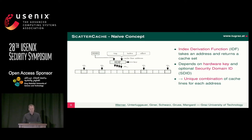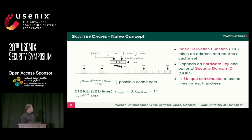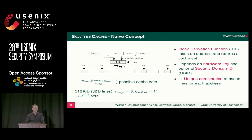We can calculate how many cache set combinations there are. If we use a 512-kilobyte cache, eight-way set-associative, which would normally have 2048 cache sets, with this design we get more than 2 to the 96 cache sets — quite a lot more.